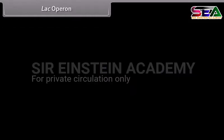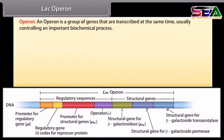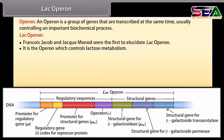An operon is a group of genes that are transcribed at the same time, usually controlling an important biochemical process. Francois Jacob and Jacques Monod were the first to elucidate the LAC operon. It is the operon which controls lactose metabolism.